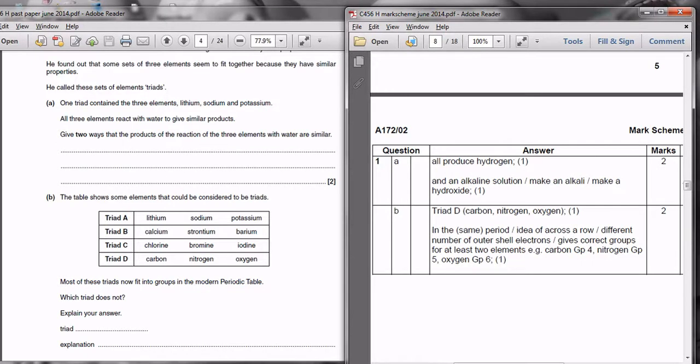This question is about Dobereiner's triads. This is the first section, section A.